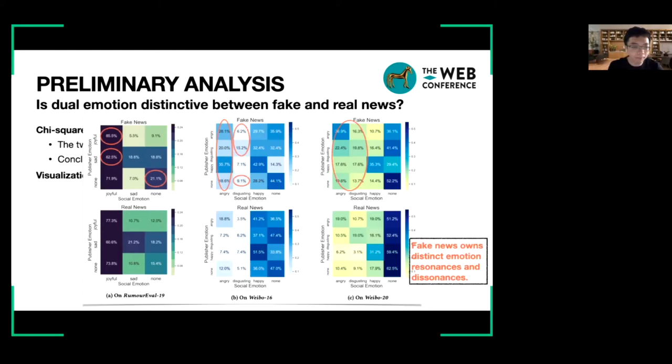In the picture, we can see there are distinct emotion resonances and emotion dissonances in fake news from real news. For example, on the English dataset over COVID-19, in fake news, the percentage of dual emotion categories that are both joyful and both none are much higher than real news. And when the publisher emotion is sad while the social emotion is joyful is also higher than real news. This evidence is stronger on the two Chinese datasets. In conclusion, there are distinct emotion resonances and emotion dissonances in fake news from real news. So, the dual emotion and their relationship should be considered when modeling.